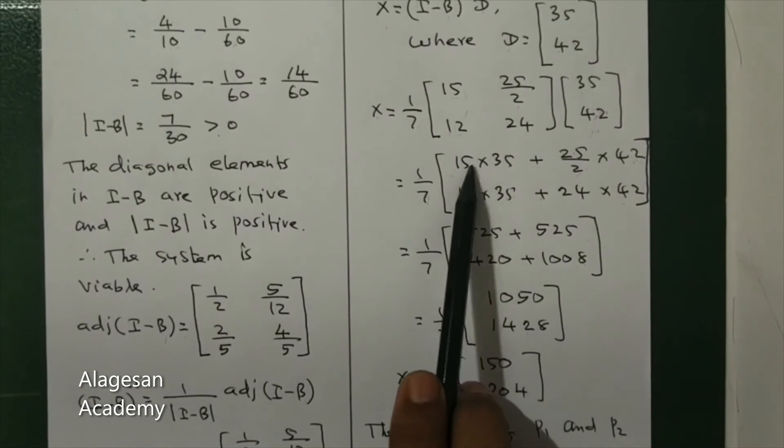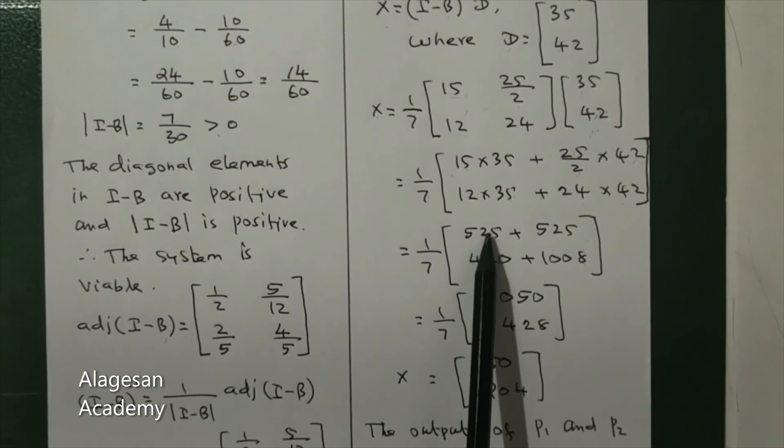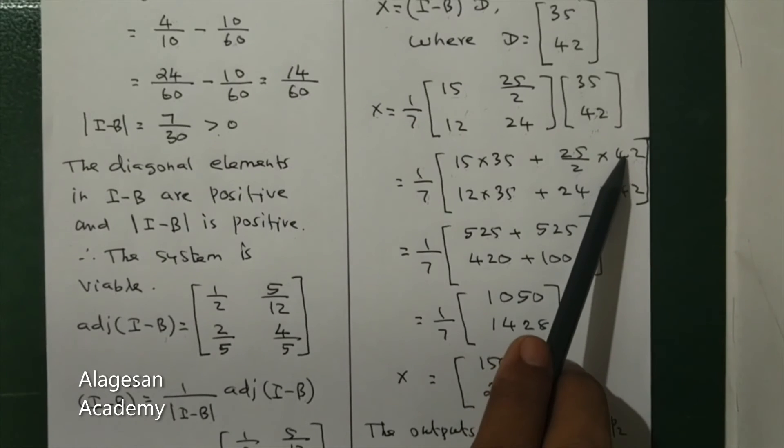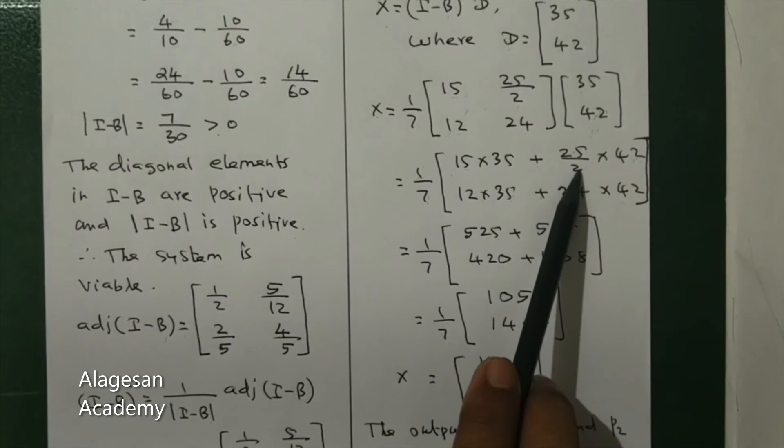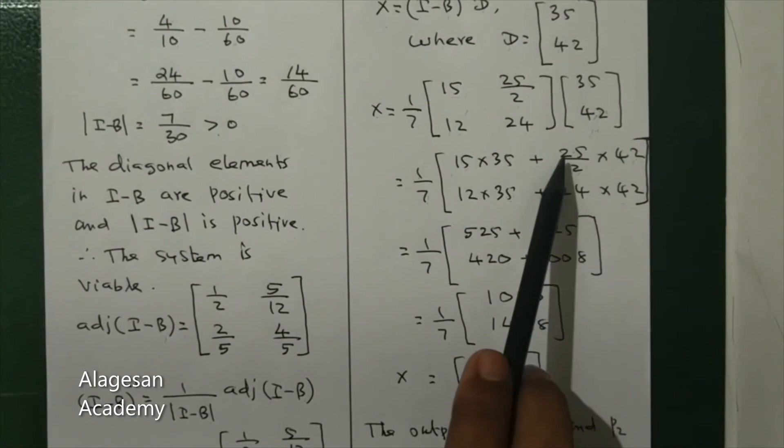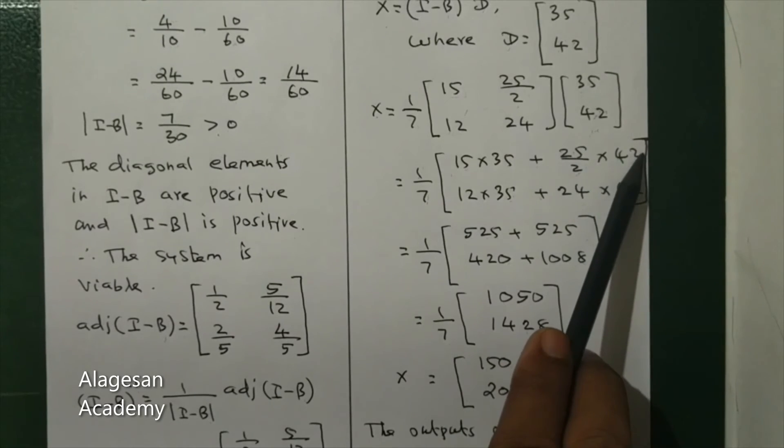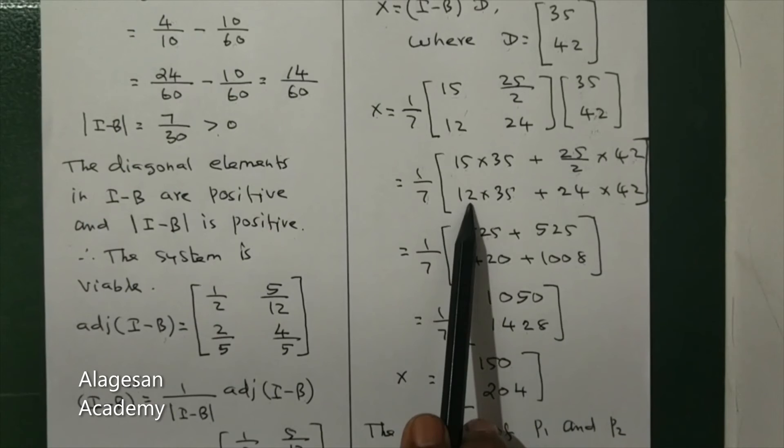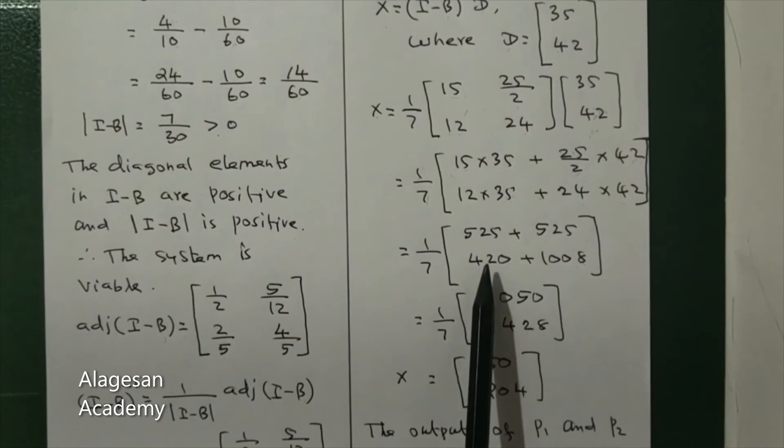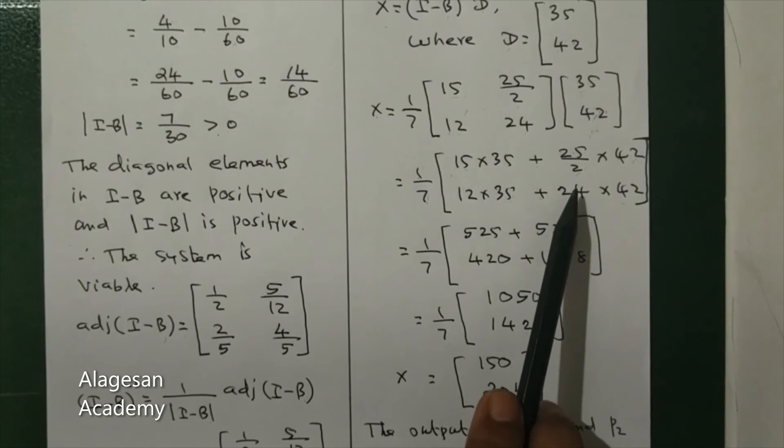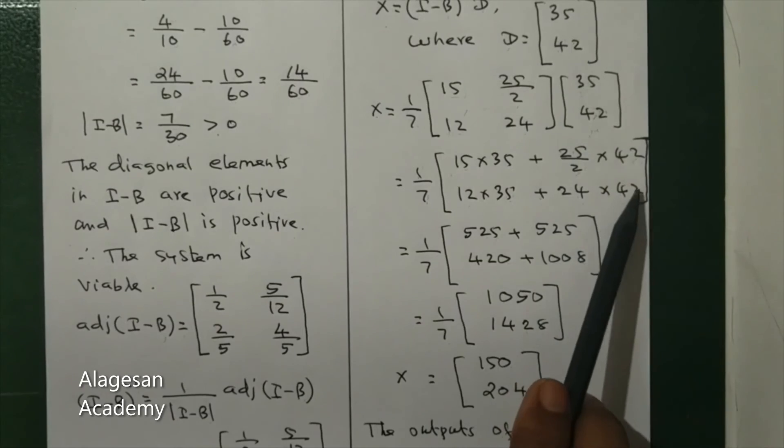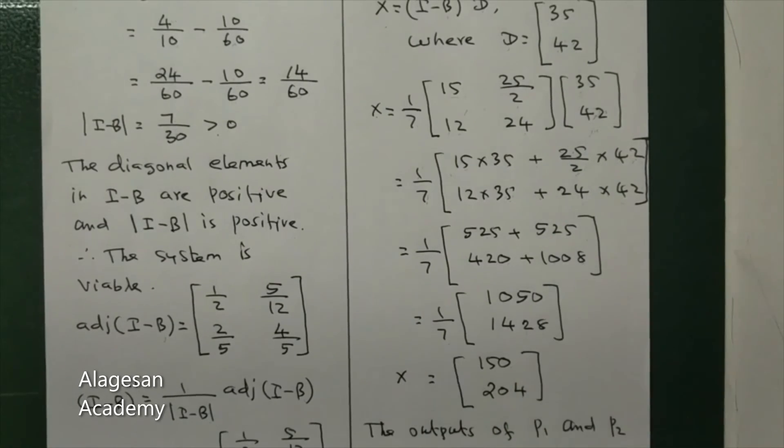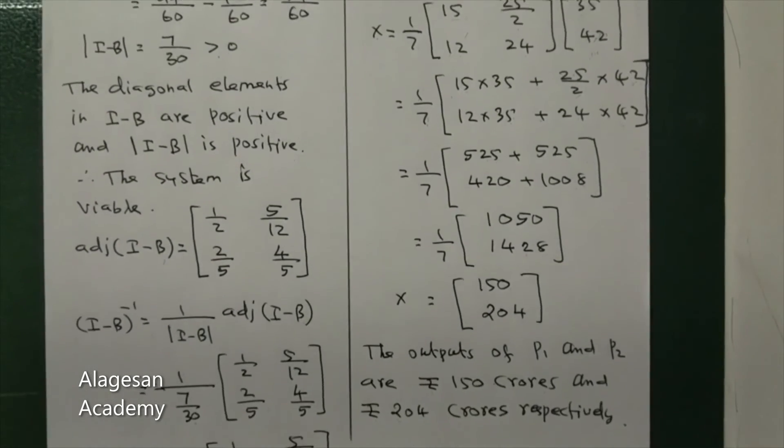15 times 35 is 525. I'm going to cancel 42, getting 21. So 25 times 21 is 525. Next, 12 times 35 is 420. Next, 24 times 42: in the first row is 1008.